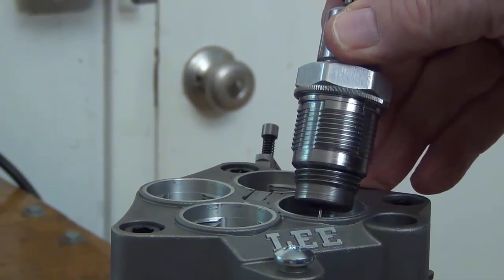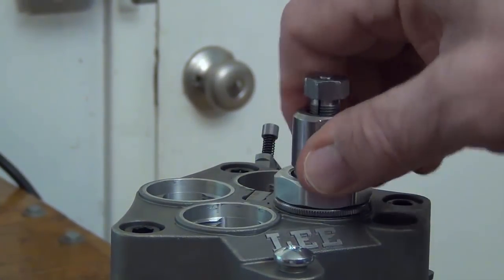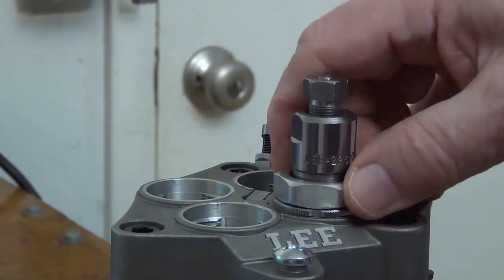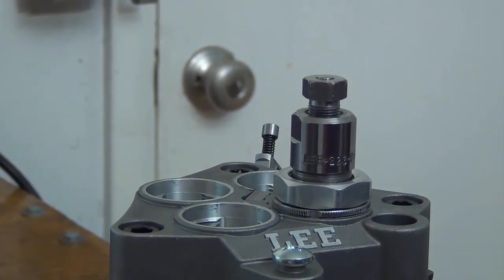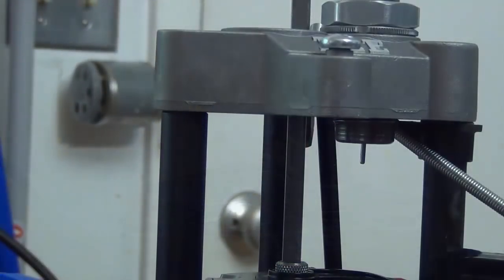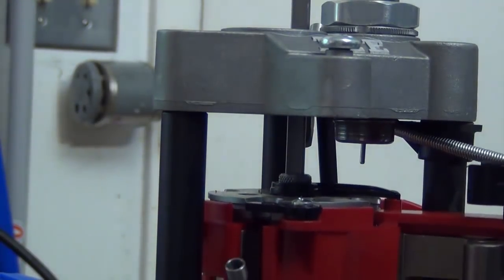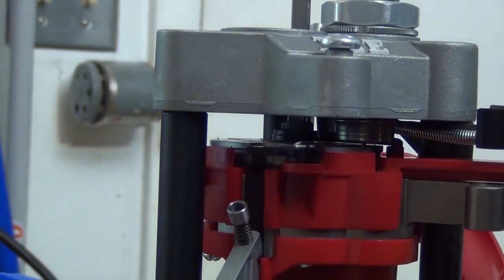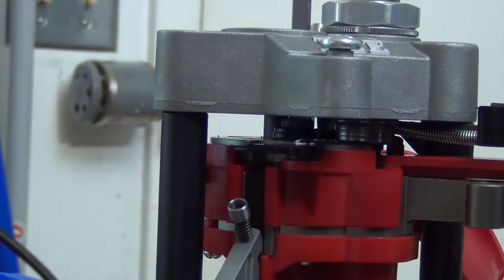The sizing die goes in this position, just above the last E in Lee. You can adjust the depth so that it just touches the shell plate as you bring the handle down.